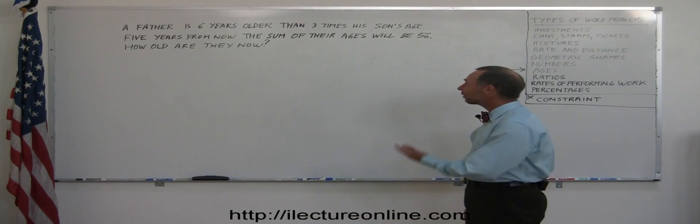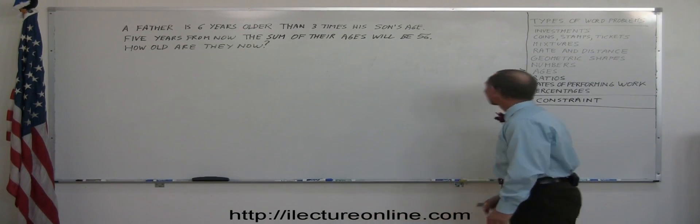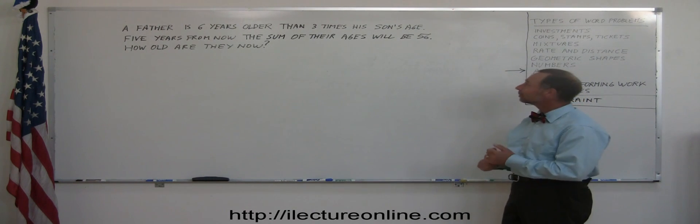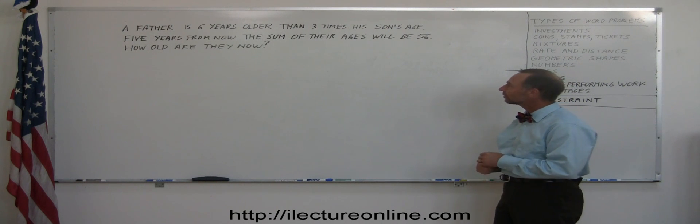Okay, here's another example of a very typical age problem. So it falls in the category of ages. And let's read the problem. A father is six years older than three times a son's age. Five years from now, the sum of their ages will be 56. How old are they now?